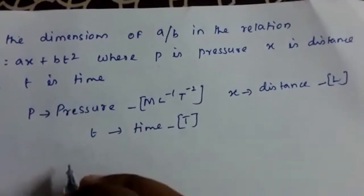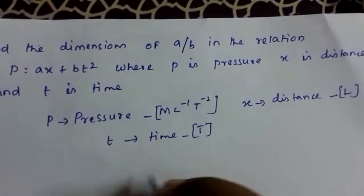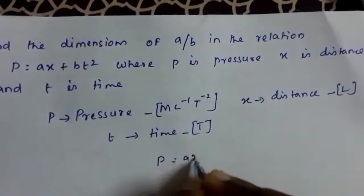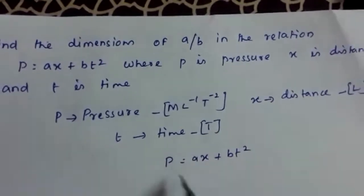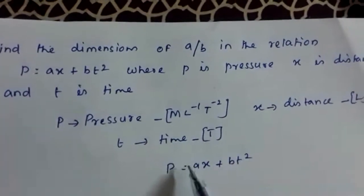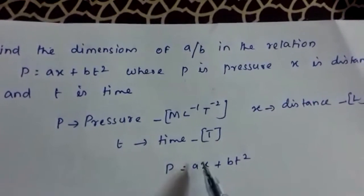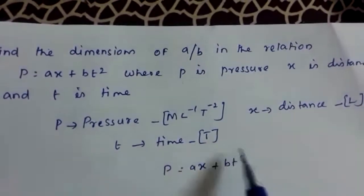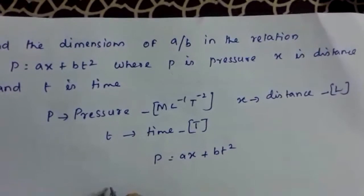According to the principle of homogeneity, all the terms in the equation have the same dimension. So, p has the same dimension as ax and bt squared. We can equate any two terms.